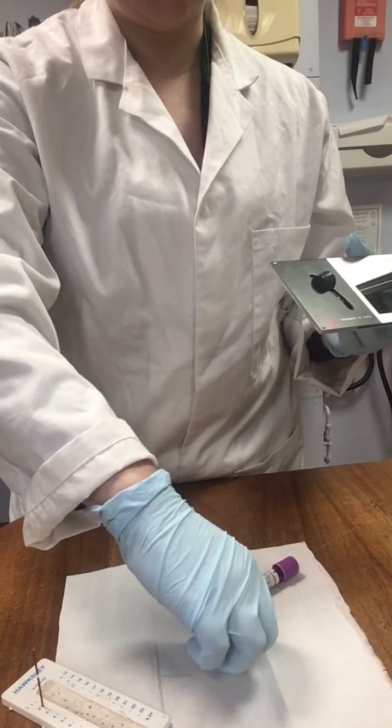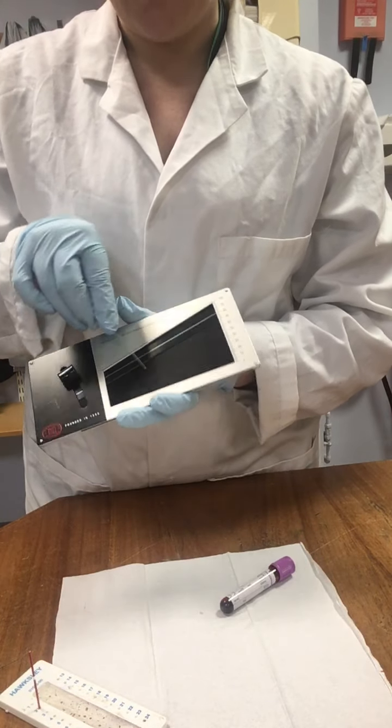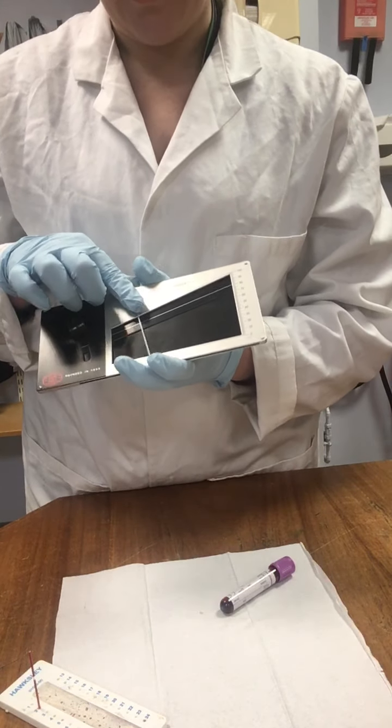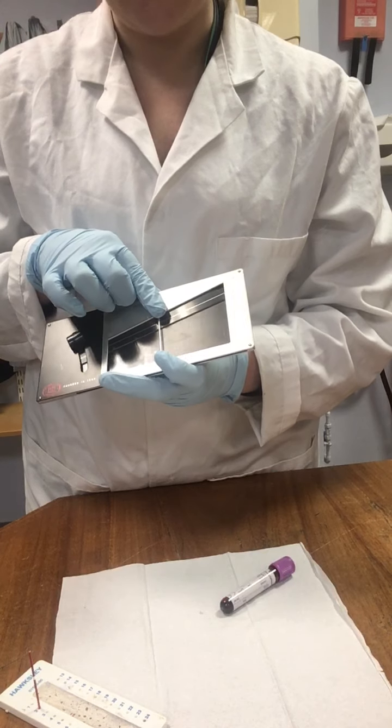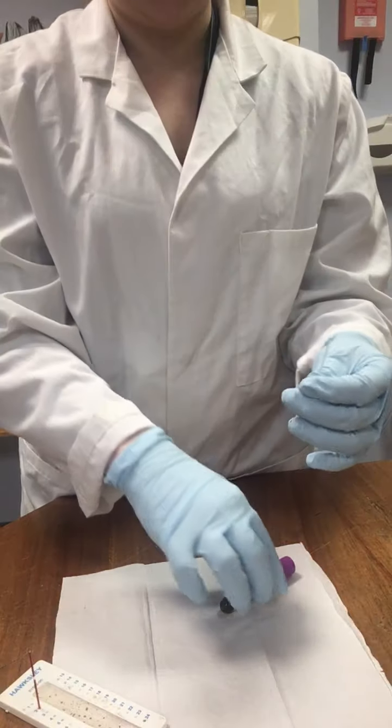And what you can do before, if you are concerned, is you can basically place your hematocrit tube up along the side to be able to see roughly whereabouts two-thirds is going to be. But with this, I know that we can just fill it up to two-thirds.